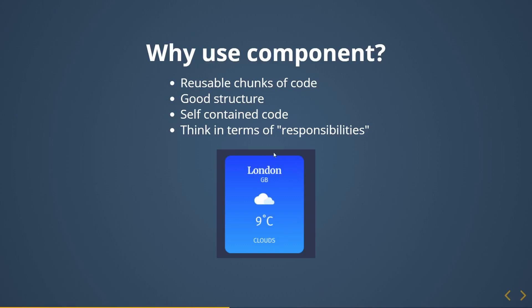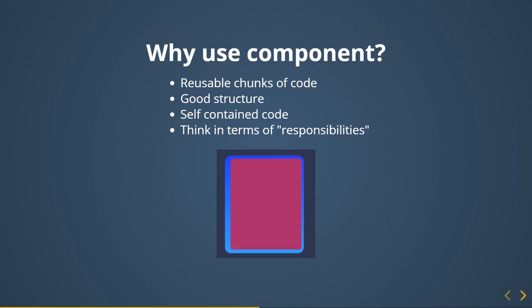Think in terms of responsibilities. The main component's responsibility is to change color based on temperature — that should be separate. The card component should not be responsible for styling the location — that is a separate responsibility and hence a separate component. The same logic applies to the image reflecting the weather state, the temperature, and so on. All these sub-components are contained within one card component.